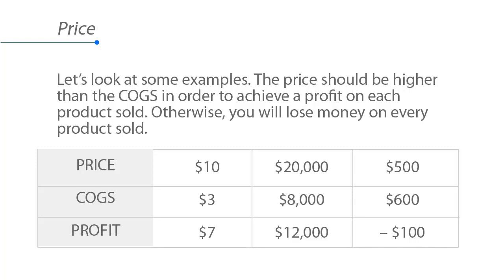If the price is $20,000 and the cost of goods sold is $8,000, that's $20,000 minus $8,000 — a profit of $12,000. If the price is $500 but the cost of goods is $600, so now it's costing us more than the price at which we're selling the product, we're going to lose $100 in profit.